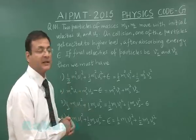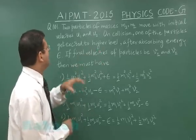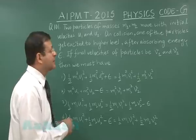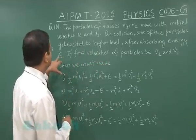The question reads: two particles of masses m₁ and m₂ move with initial velocities u₁ and u₂. They have some kinetic energy. On collision, one particle gets excited to a higher level.